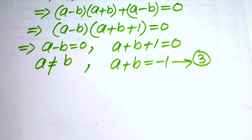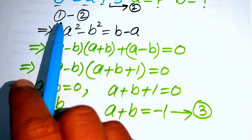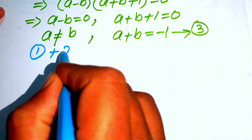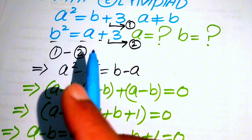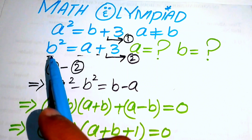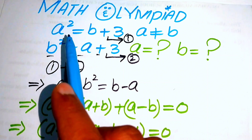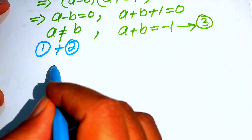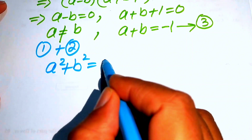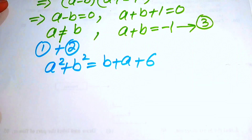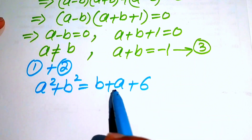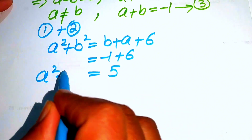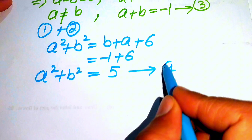Now we add equation one and equation two. The left hand side gives a squared plus b squared, and the right hand side gives b plus a plus 3 plus 3, which is a plus b plus 6. Since a plus b equals minus one from equation three, we substitute to get a squared plus b squared equals minus one plus six equals five. We call this equation four.